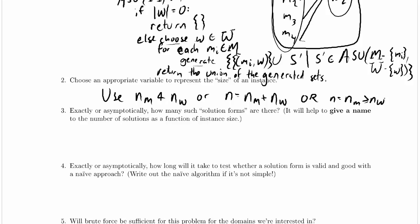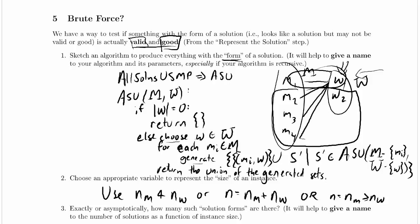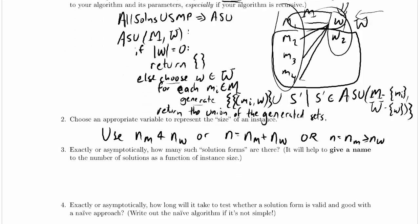Given that it says exactly or asymptotically how many solution forms are there, it'll help to give a name to the number of solutions as a function of instance size. So I'm going to do an analysis of our ASU algorithm up above.